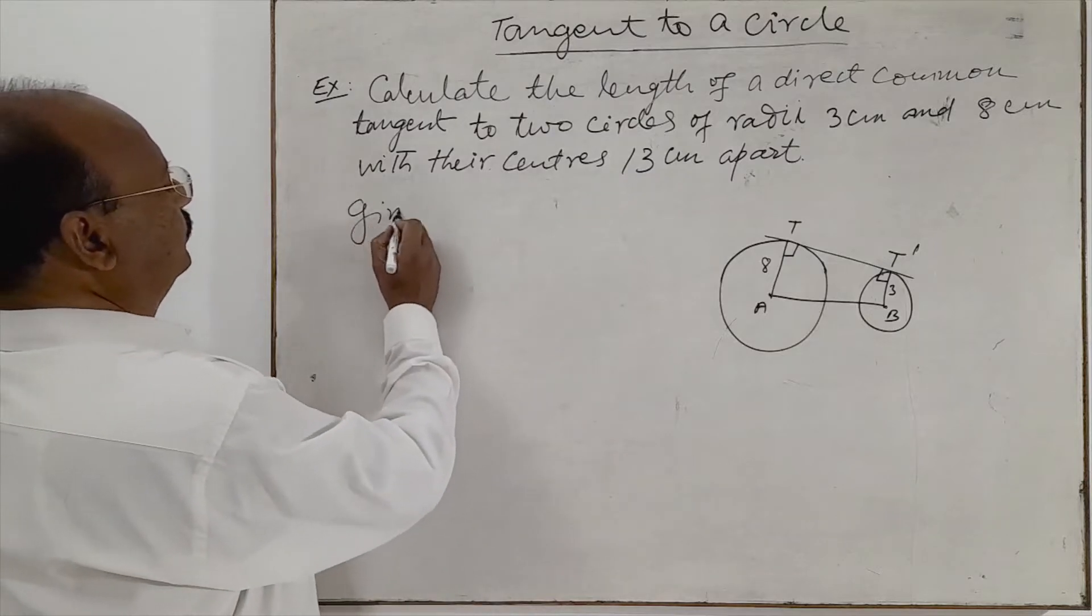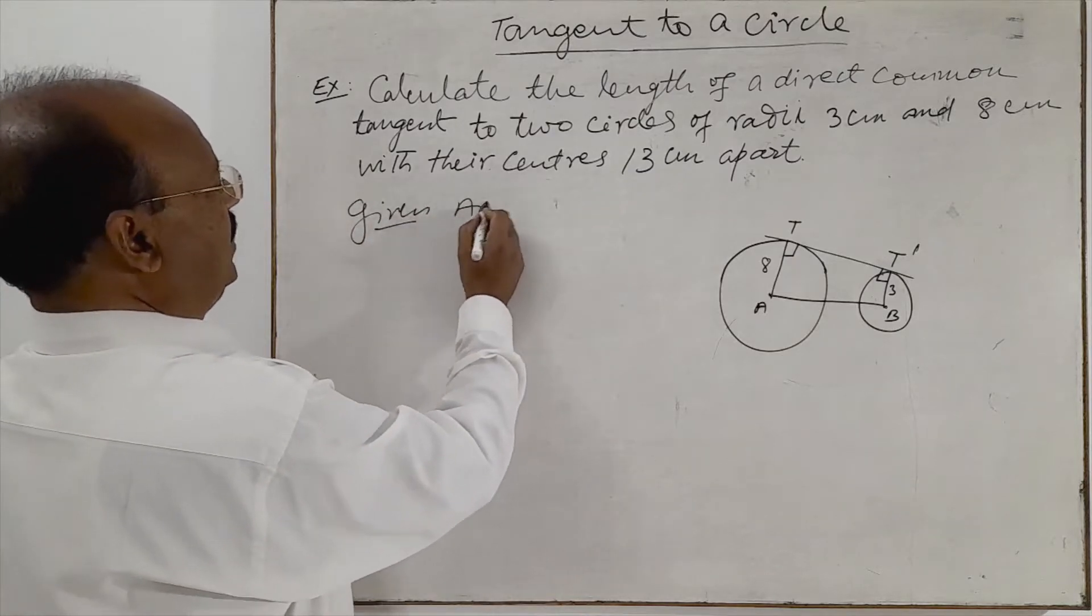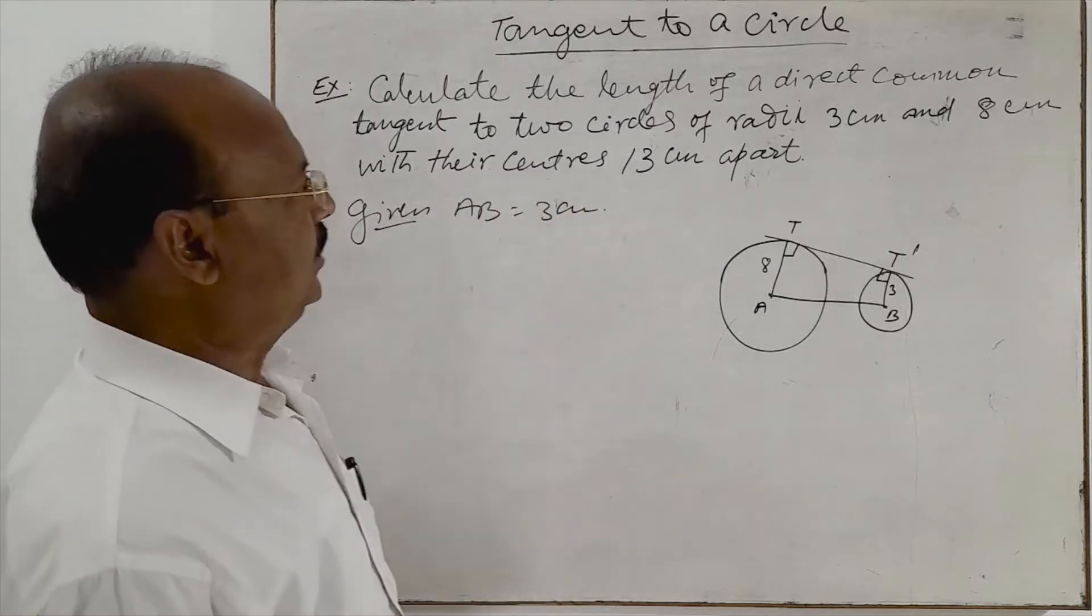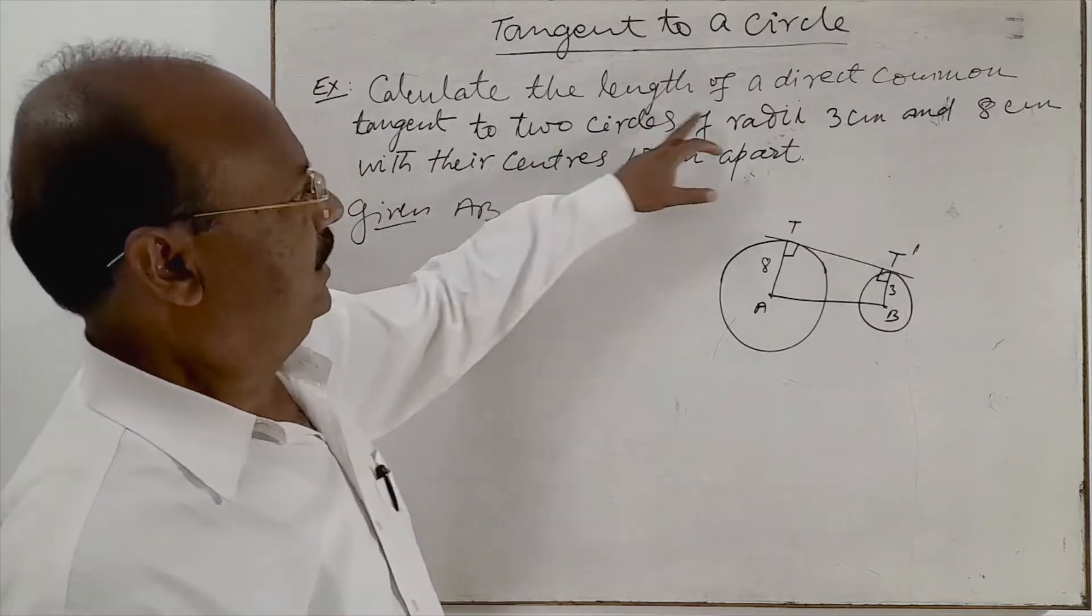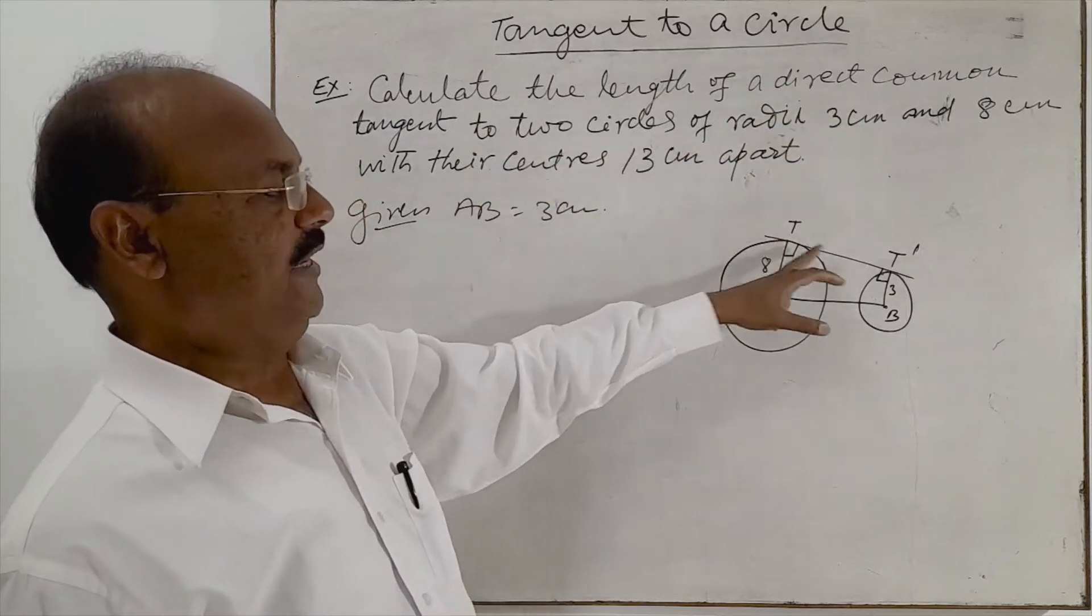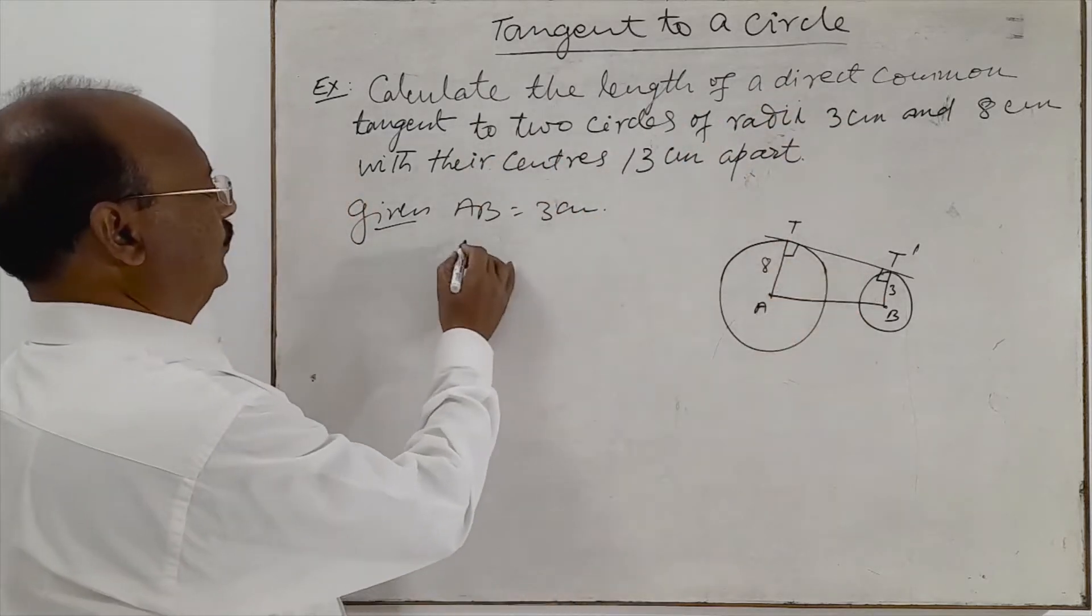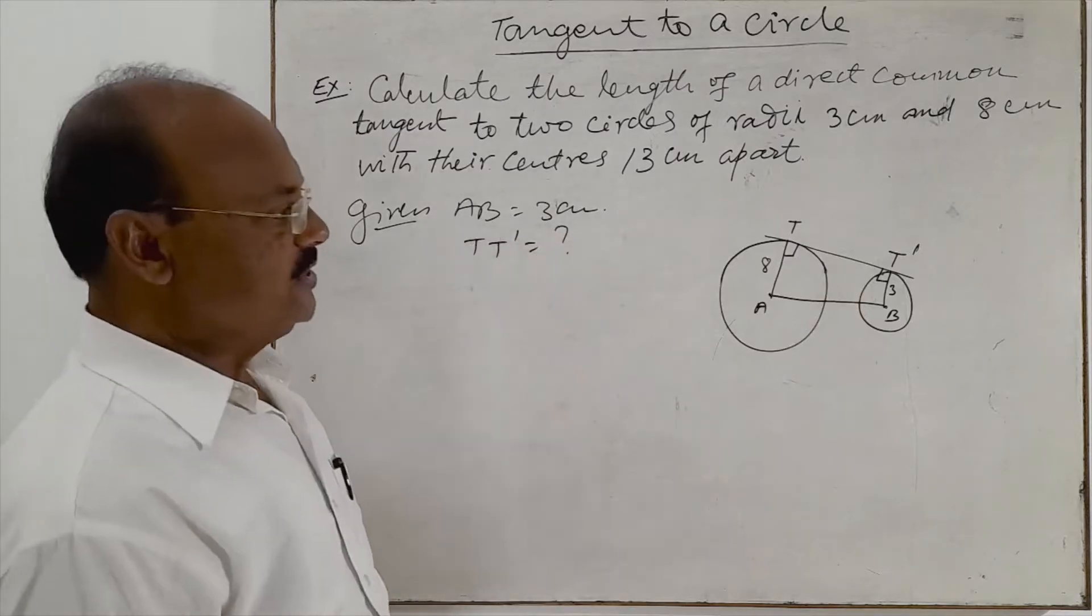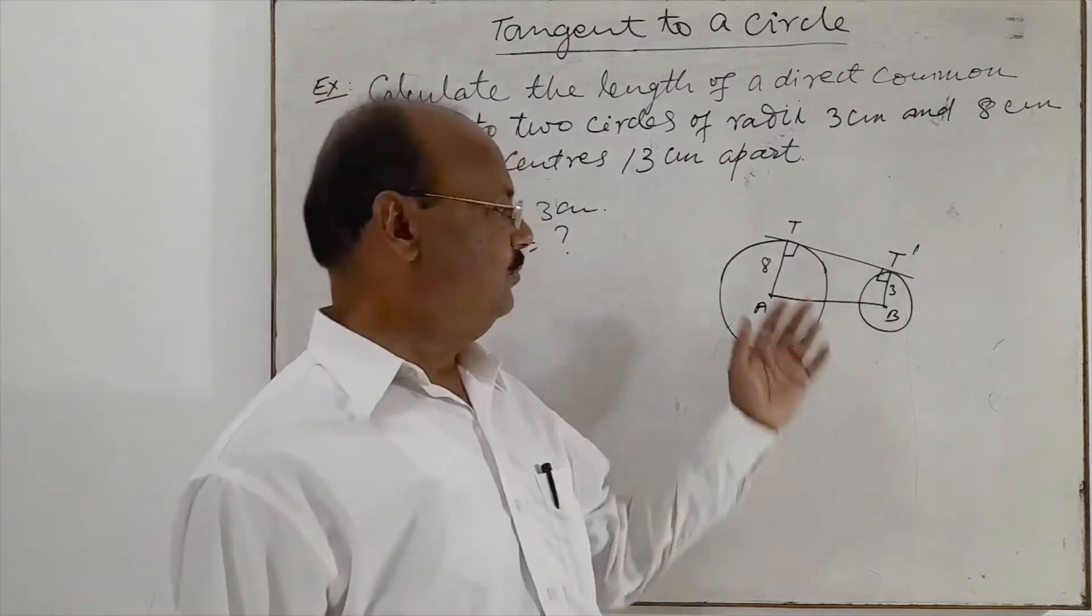So we are given AB is equal to 13 cm. And what we have to find out? We have to find out length of a direct common tangent. Means we have to find out TT'. So we will start the solution with a very simple construction.